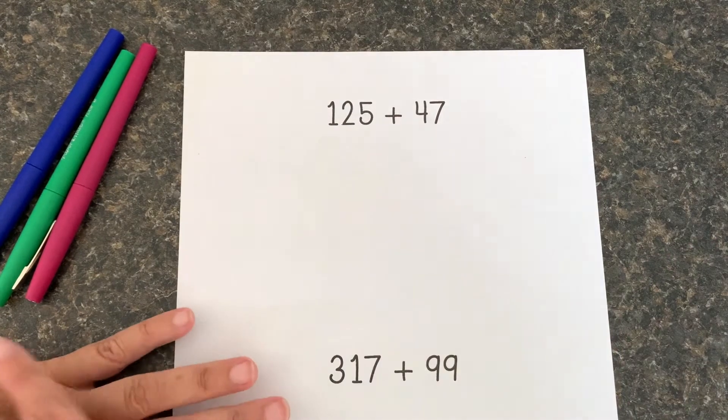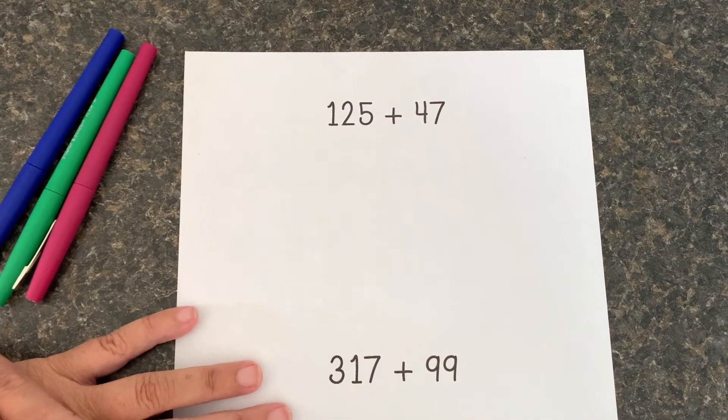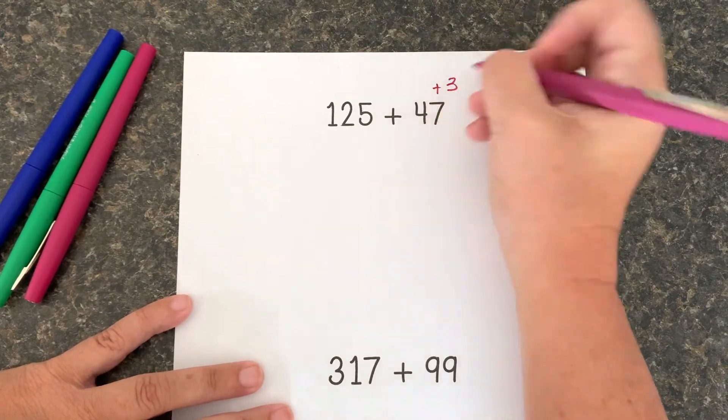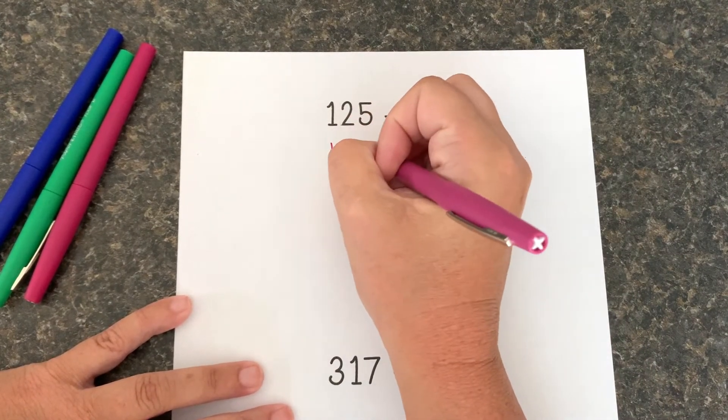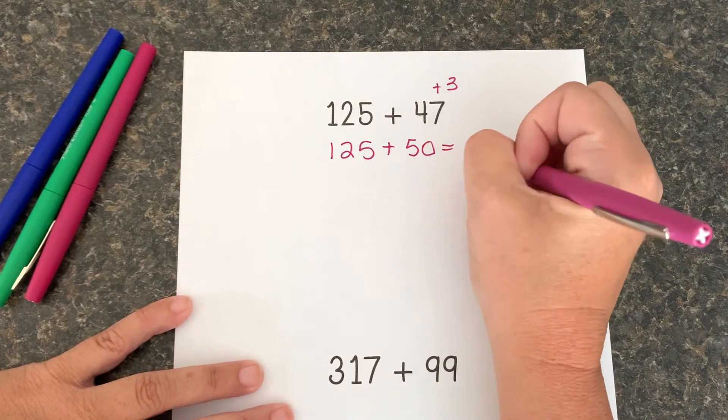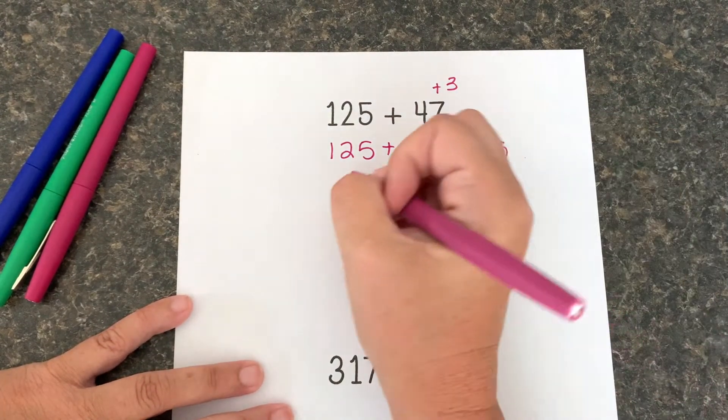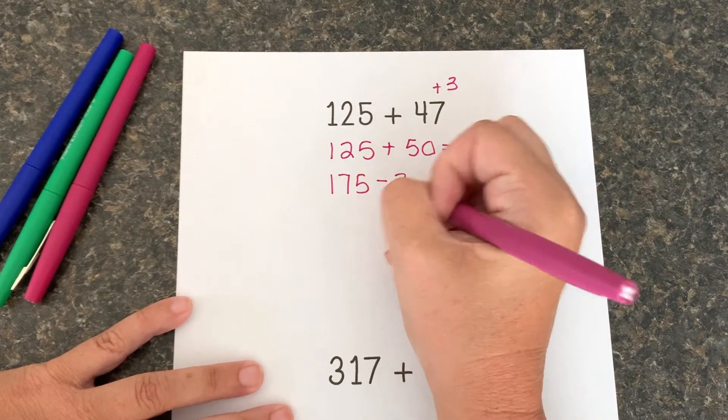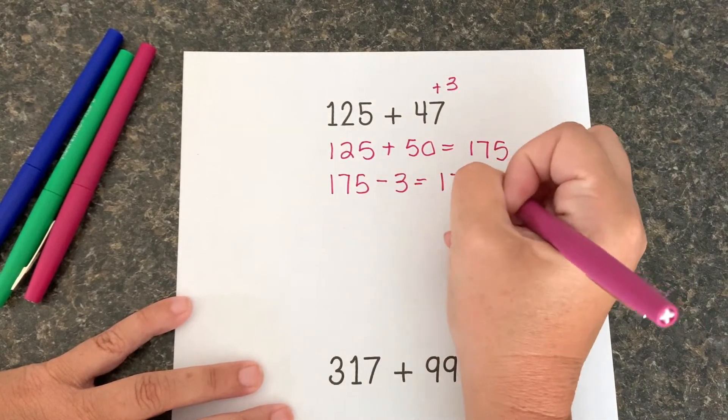Alright, here we have 125 plus 47. So again, I'm gonna round 47. I'm gonna add 3 to that and make it 125 plus 50, which gives me 175. And now I have to adjust. So 175 take away 3 gives me 172.